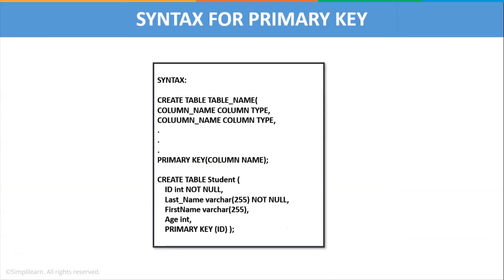Let us now understand the syntax of primary key. To create a new table with a column defined as a primary key, you can use the keyword PRIMARY KEY at the end of the definition of that column. The syntax is: CREATE TABLE table_name, and within the parentheses mention the column names and their column types, and finally mention the PRIMARY KEY inside the brackets. For example, if I want to create a table with ID, last name, first name, and age, I would use ID as the primary key.